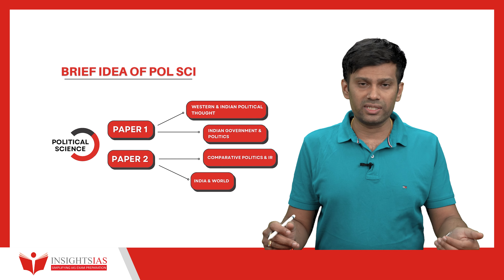Part B focuses on Indian foreign policy — India's relations with neighboring countries, global powers, and the diaspora. We study the making of Indian foreign policy, which institutions play an important role, and key policies like the Neighborhood First Policy. Students often ask whether they need to read about all countries — not necessary. Only the most important ones like the US, Russia, Israel, Japan, and China. For Africa and Central Asia, we approach it region-wise as a whole.